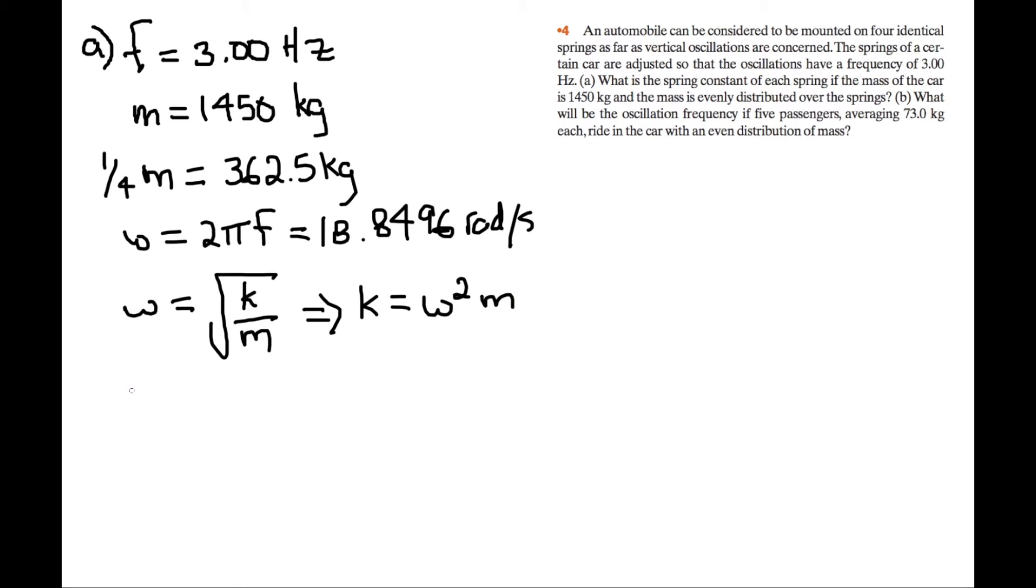So we want to calculate the spring constant for one tire, we use the quarter mass. So you do k is equal to 18.8496 squared times the quarter mass, 362.5, which gives us a very large number, 129 kilonewtons per meter.